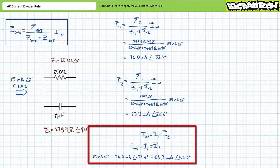An algebraic rearrangement of the Kirchhoff's current law equation for this parallel circuit, solving for I2, suggests that IN minus I1 equals I2. Substituting in the given value for incoming current and the calculated value for I1 using the AC current divider rule yields I2 to be 63.3 mA at an angle of 56.6 degrees, confirming our earlier calculation.